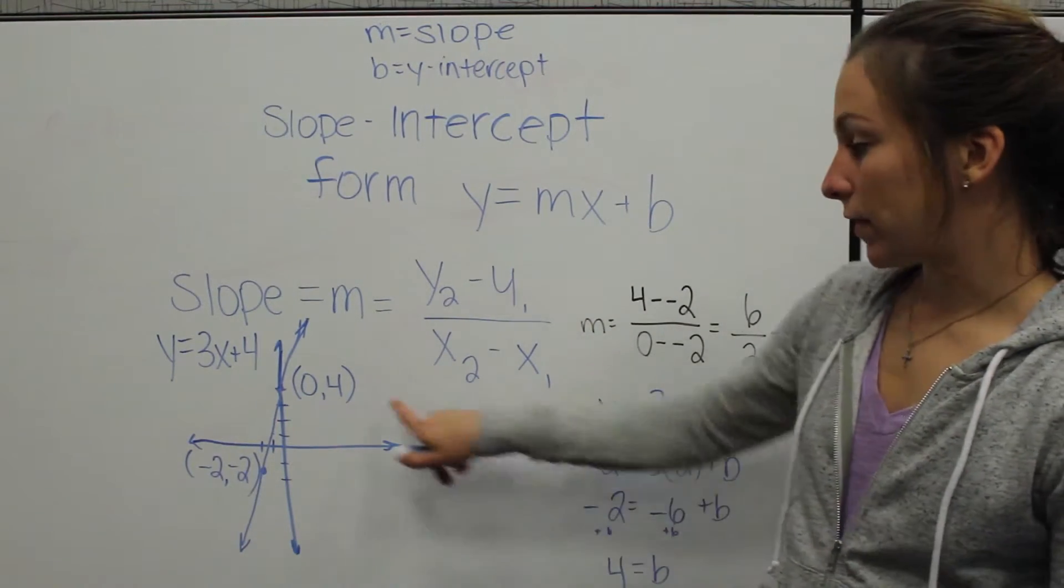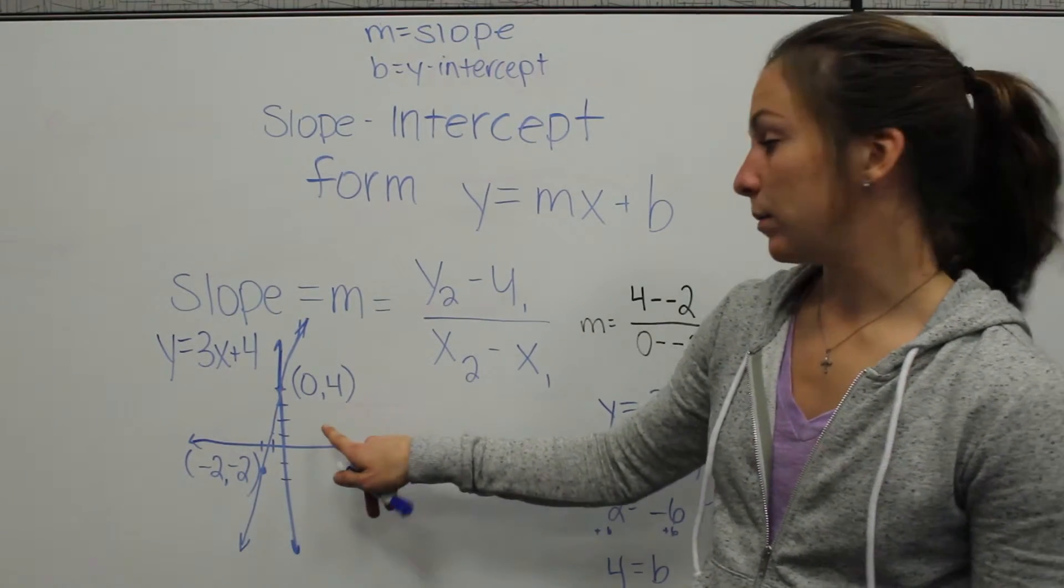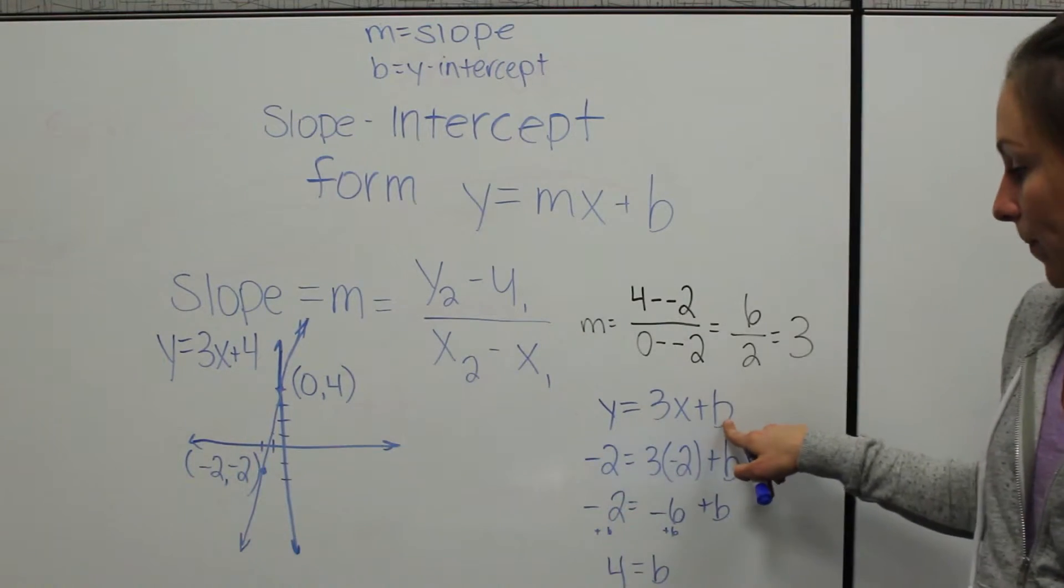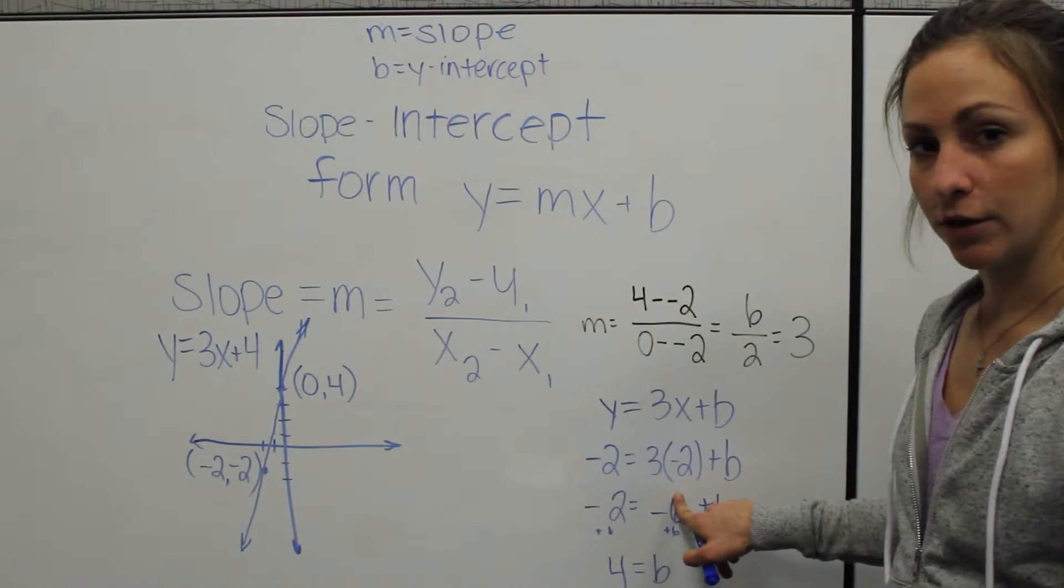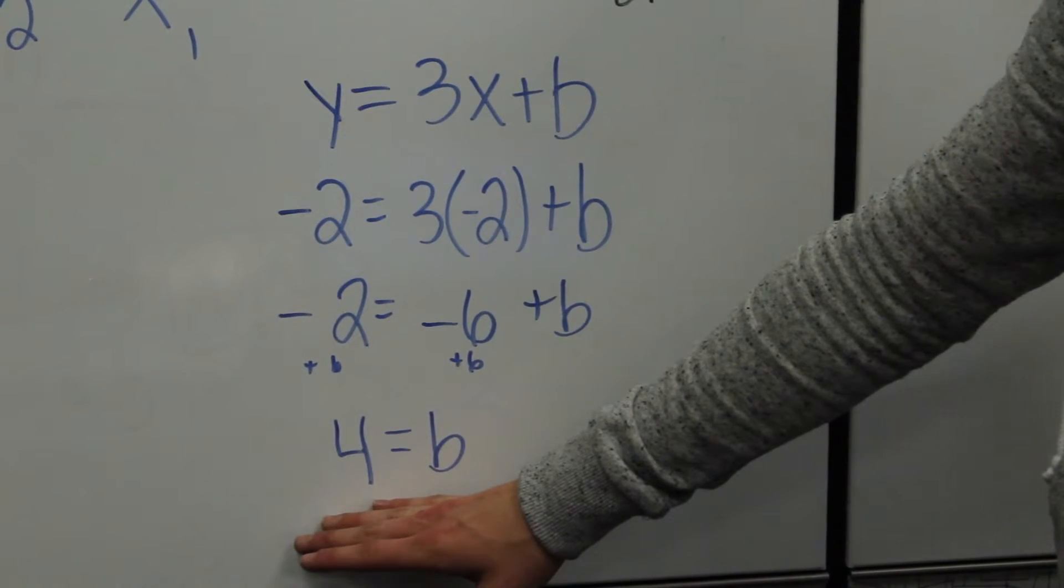We take one of the values that we use to calculate slope and plug it into this equation that we have. When we plug in negative 2, negative 2, we can solve for b and get 4.